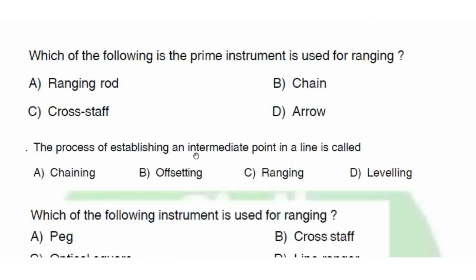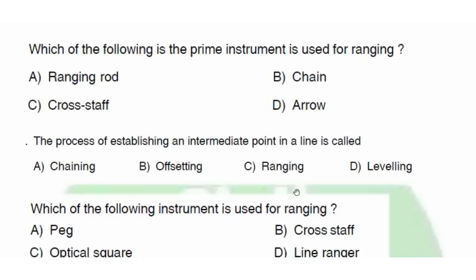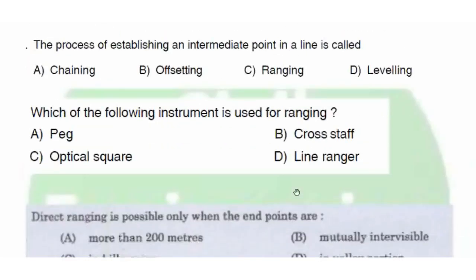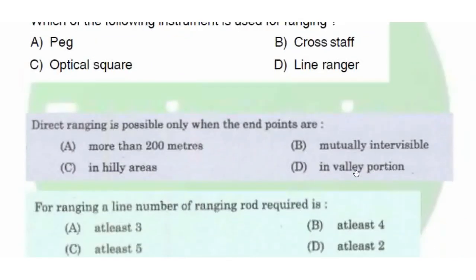Previous exam questions: The prime instrument used for ranging is the Ranging Rod — answer option E. The process of establishing an intermediate point in a line is called Ranging — answer option C. The instrument used for ranging is the Line Ranger, an optical instrument — answer option B. Direct Ranging is possible only when the end points are mutually inter-visible — answer option B.